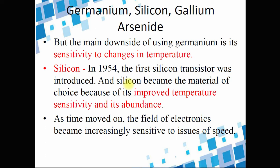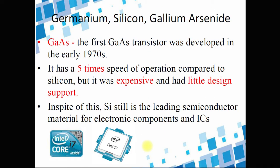Silicon is actually the best remedy for germanium because of its improved temperature stability and abundance. As time moved on, the field of electronics became increasingly sensitive to the issue of speed, so gallium arsenide was developed in the early 1970s. A GaAs transistor was built with five times the speed of operation compared to silicon. However, GaAs was expensive and had little design support. In spite of this, silicon remains the leading semiconductor material for electronic components and integrated circuits such as Intel.